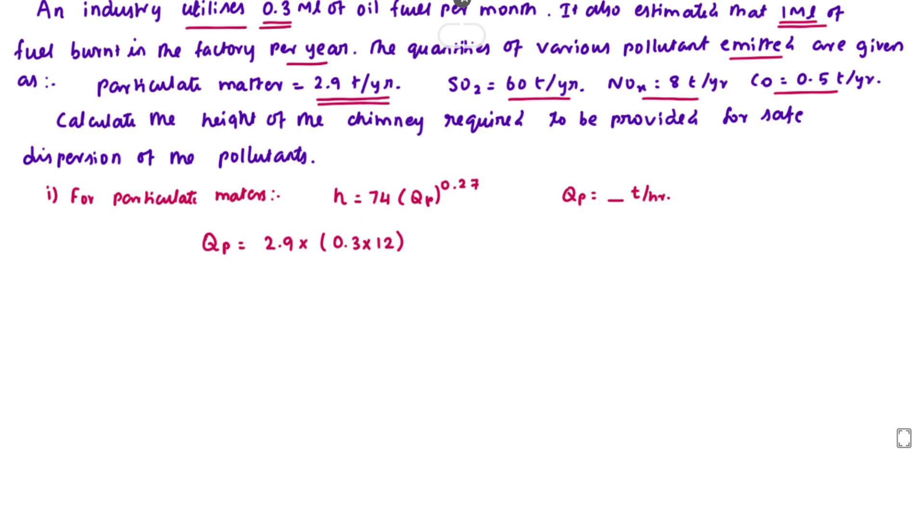12, so per month is 0.3, we multiply by 12 months, equals 10.44 ton per year. Now we have to find out ton per hour, so 10.44 into 1 divided by 300 into 24. Assuming that there are 300 working days in the year with 24 hours of working...